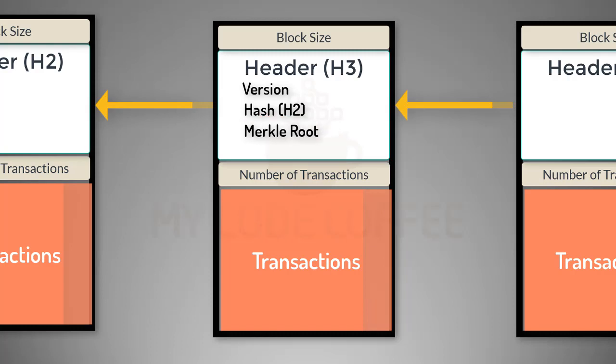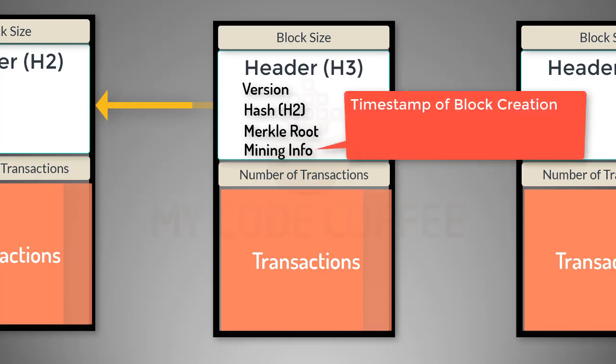The fourth set of metadata is all about mining. What mining is and how mining competition works, we will discover in the section on mining. But here I just want to tell you that as part of mining metadata it has the timestamp of block creation, the difficulty target of the proof of work algorithm, and a counter called nonce, which is used for the proof of work algorithm.